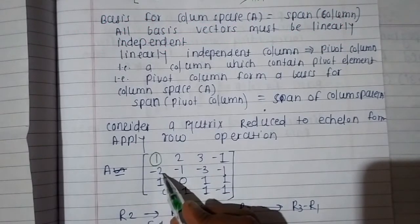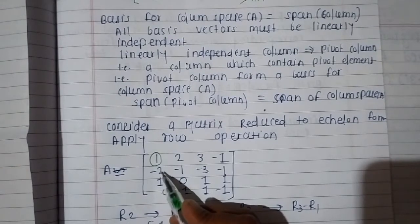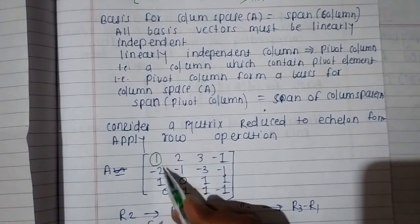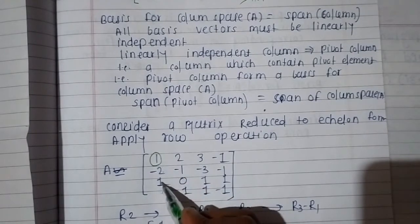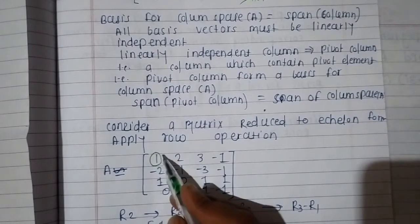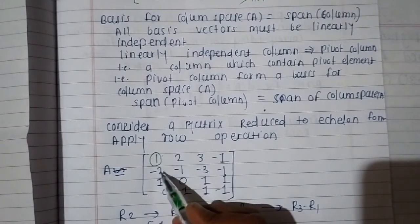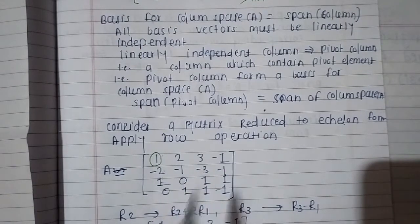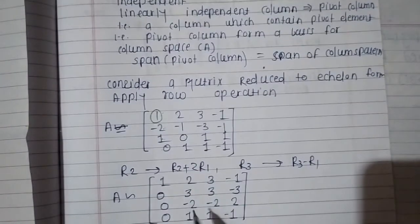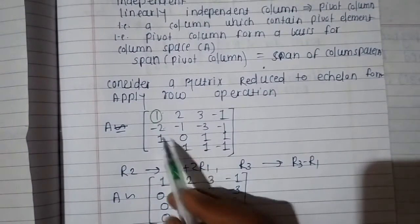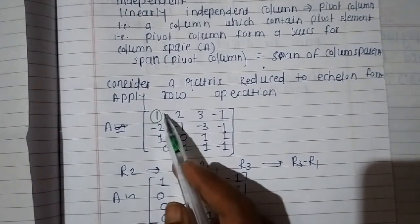Here we have minus two below the leading one. To eliminate it, we do row operation R2 plus 2 times R1, so minus two plus two is zero. For R3, since there is a one below, we do R3 minus R1. So R2 changes to R2 plus 2 times R1, and R3 changes to R3 minus R1.